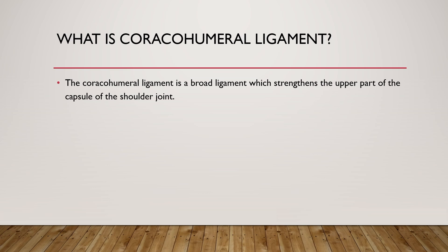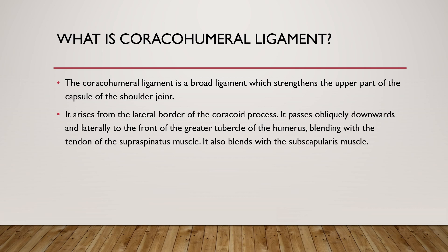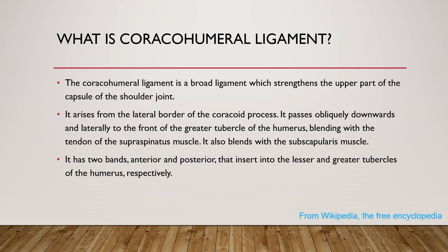The coracohumeral ligament is a broad ligament connecting the coracoid process and the humerus. It arises from the lateral part of the coracoid process and passes obliquely downward and laterally to the front of the greater tubercle of the humerus, inserting into the lesser and greater tubercle of the humerus.